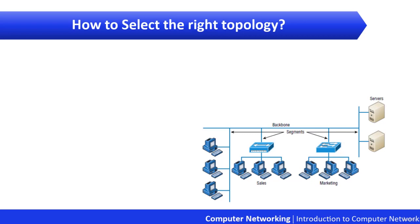It's the same thing when selecting physical media for a specific network. You have a buffet of network topologies to choose from, and each one has its pros and cons. It really comes down to asking the right questions: How much cash do you have? How much fault tolerance and security do you really need? Is this network likely to grow rapidly? Will you need to quickly and easily reconfigure often — in other words, how scalable does your network need to be?